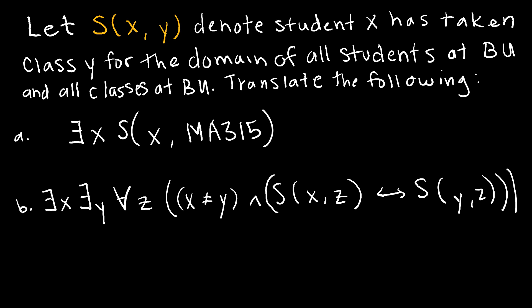Just for fun you can go ahead and try this one on your own before we go over the answer together. So I suggest you press pause try both parts of the question and then press play, or just follow along with me. So let's take a look. We have let S(x,y) denote student x has taken class y for the domain of all students at BU and all classes at BU. So translate the following. So there exists an x such that S(x, MA315). So what does that mean in English? Well, there exists a student x who has taken MA315, which is of course discrete mathematics at Bellevue University.